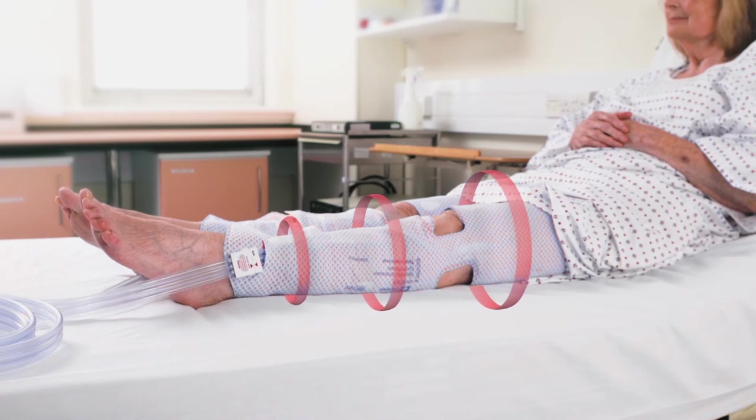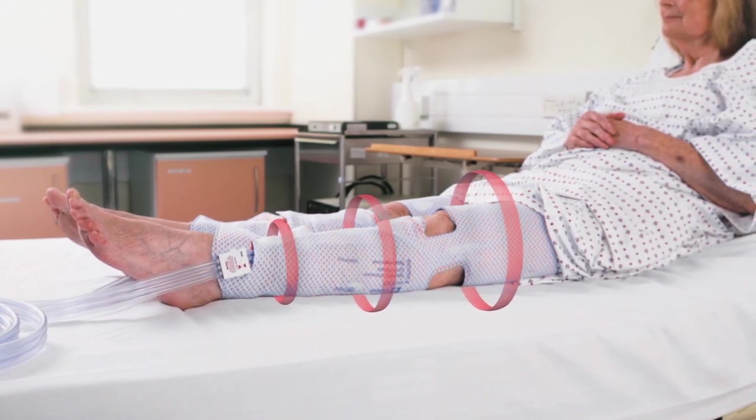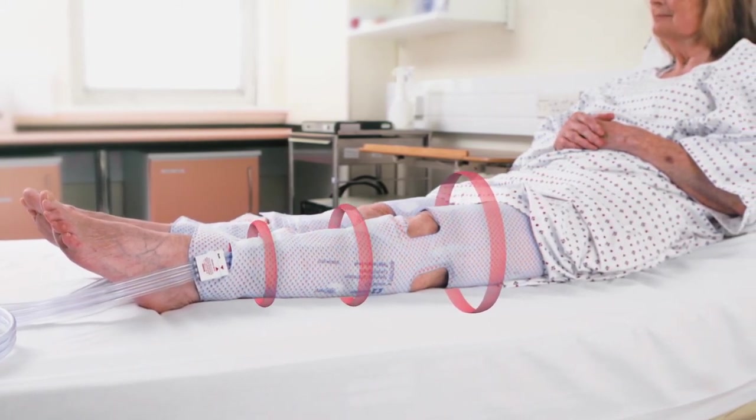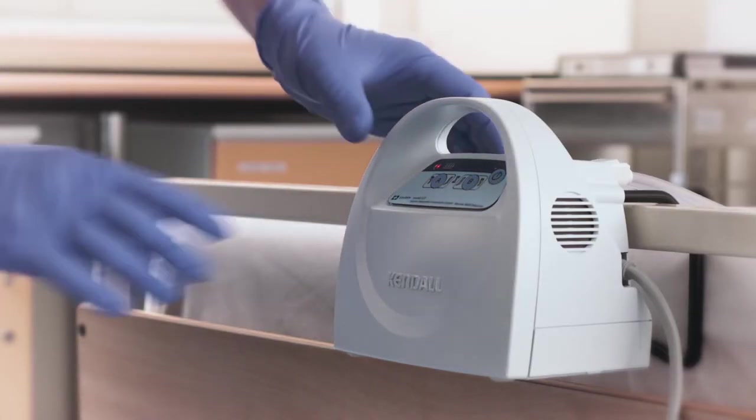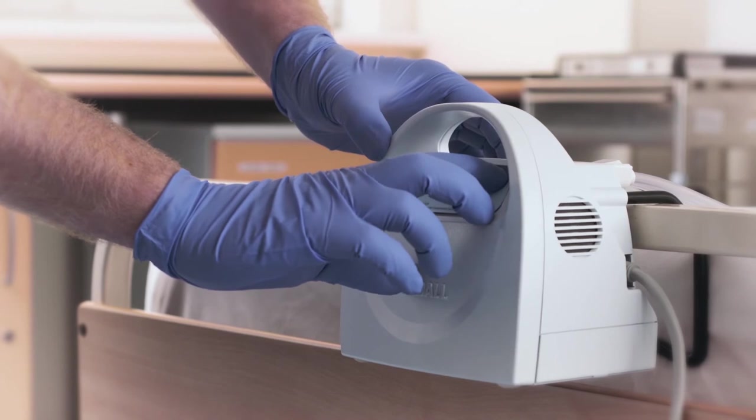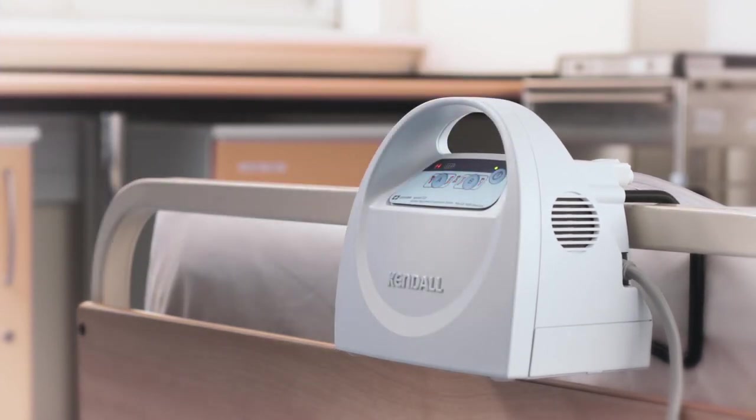no further intervention is required as the controller will automatically detect whether a knee-length or thigh-length sleeve is being used and then begin to deliver the set pressure pattern of 45, 40, 30 millimeters of mercury pressure. The same one-touch startup operation applies when using leg sleeves with the SCD express controller.